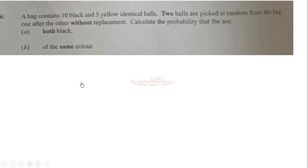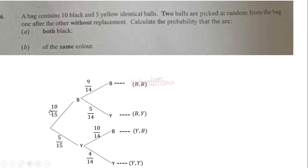Another method is to use the understanding that when you pick balls without replacement, the sample space is affected. The probability of choosing a black ball first is 10 over 15. Then choosing another black ball is 9 over 14, because the sample space is reduced. After choosing a black ball, the probability of choosing a yellow ball is 5 over 14.